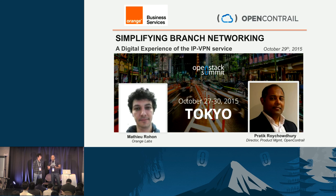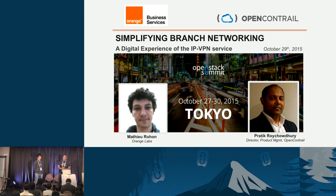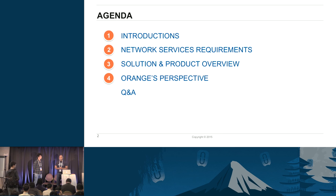Today we are going to talk about simplifying and automating branch networking. We will look at the journey and approach that one of the tier one service providers is taking, what the requirements and expectations are in delivering this solution by leveraging existing technologies and services like L3 VPNs. We will also look at the OpenContrail product, which is a cloud network automation initiative within Juniper. We will start by introducing the two companies, Orange and OpenContrail, then look at some of the requirements in terms of network services to enable such a solution.